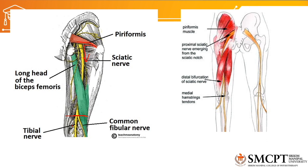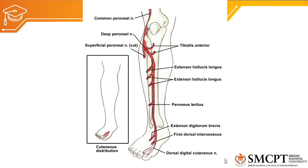The tibial nerve, passing posteriorly, supplies innervation to the gastrosoleus muscle and the sole of the foot. The common peroneal nerve wraps around the neck of the fibula and supplies muscles such as tibialis anterior, extensor hallucis longus, peroneus tertius, extensor digitorum brevis, and others in the lateral and anterior compartments of the leg.